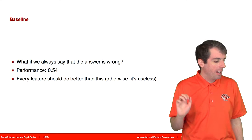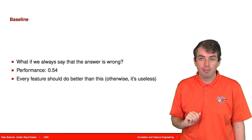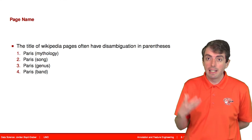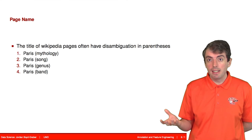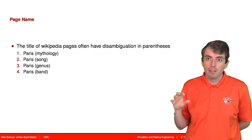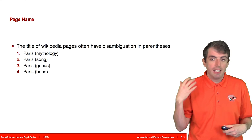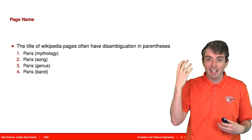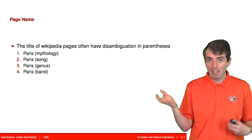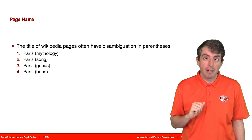So one thing that we can do is we can take advantage that our answers and our guesses both come from Wikipedia. And since they come from Wikipedia, when you have an ambiguous answer, you have the name of the page followed by parentheses. So, for example, when you talk about Paris, you can talk about the mythological figure. You can talk about the city. There is a bird called Paris. And you also have a band called Paris. So all of these are possible things that can be referred to by the word Paris.